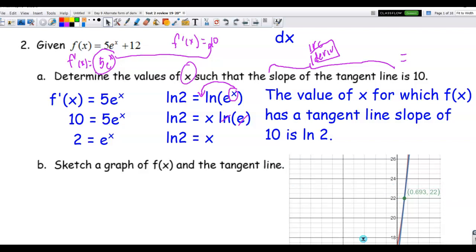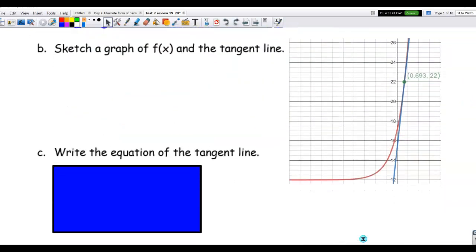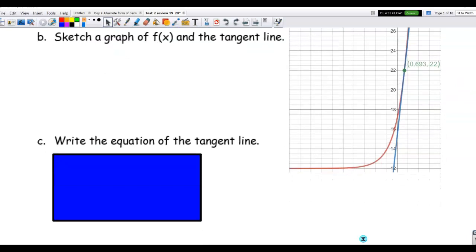And so I have given you a graph. Mine is computer produced. I asked you to sketch a graph and the tangent line. But I wanted you to be able to see that this value of x right here, if you were to go to your calculator and type in ln of 2, you would get approximately 0.693. So that's the red graph is the exponential function, and the blue line is the tangent line.